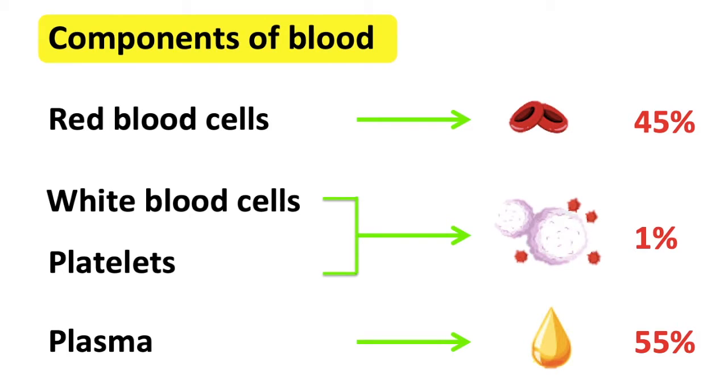Let's begin with red blood cells. Red blood cells are also known as erythrocytes. These are produced in the bone marrow. They carry oxygen and nutrients. They contain a protein called hemoglobin.